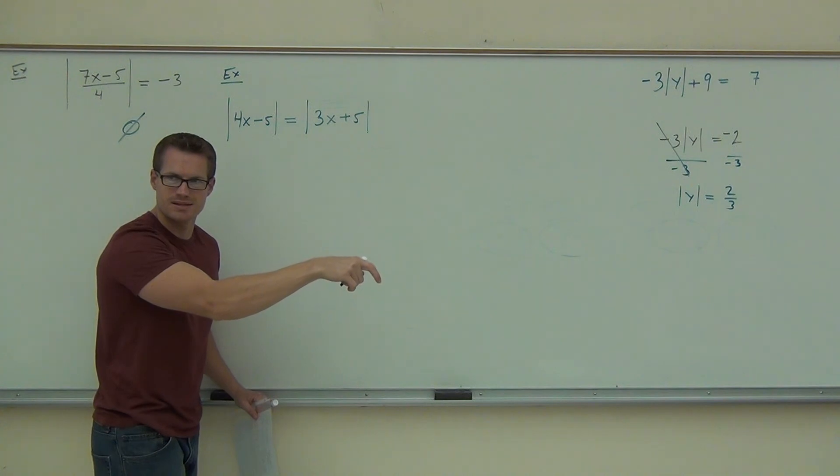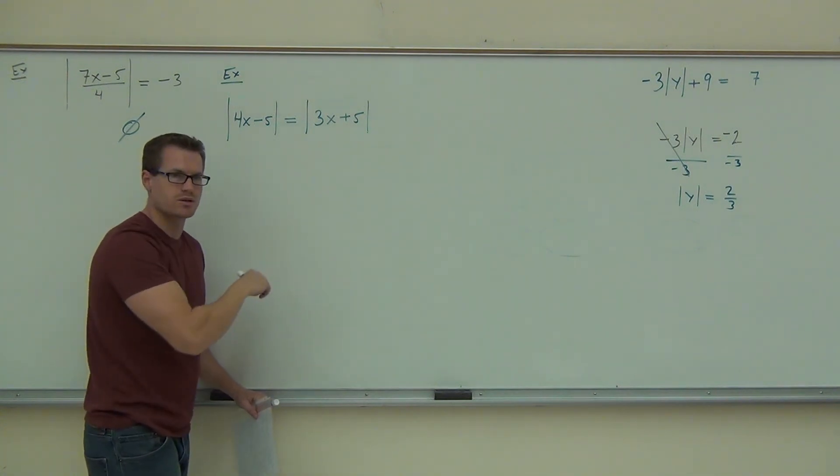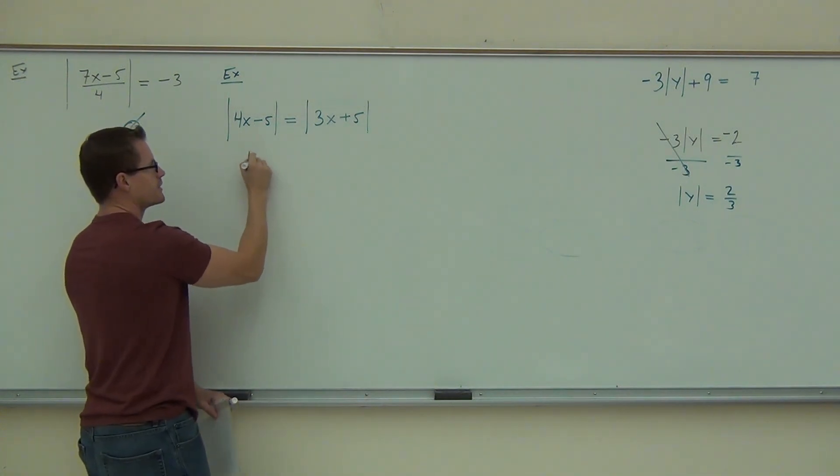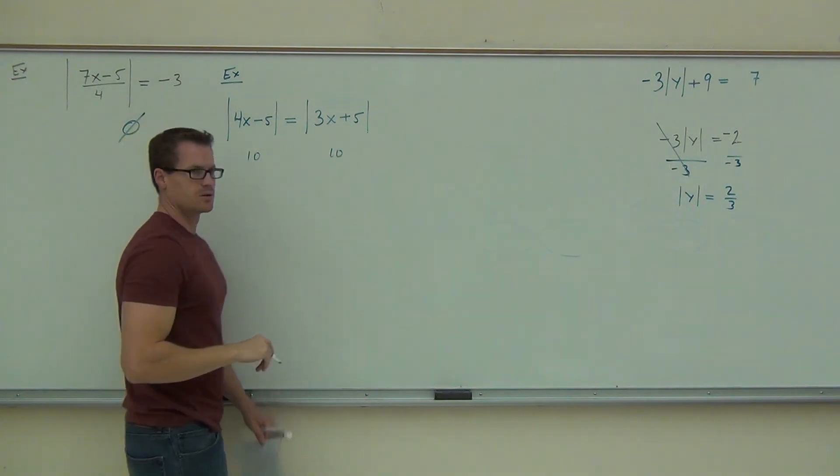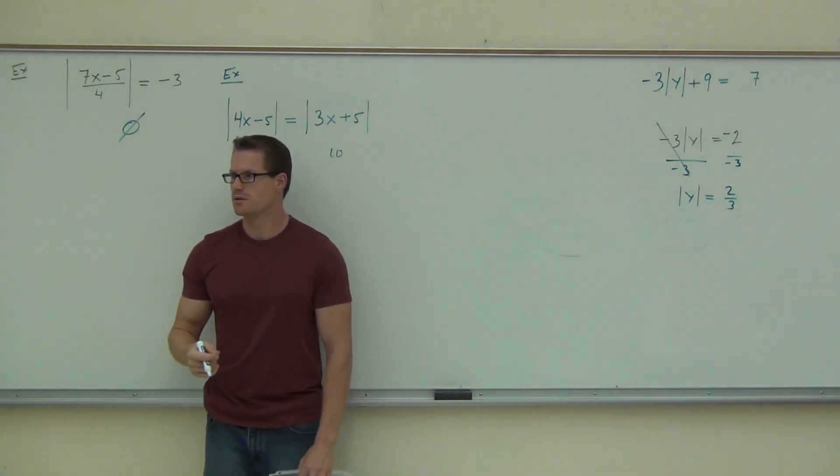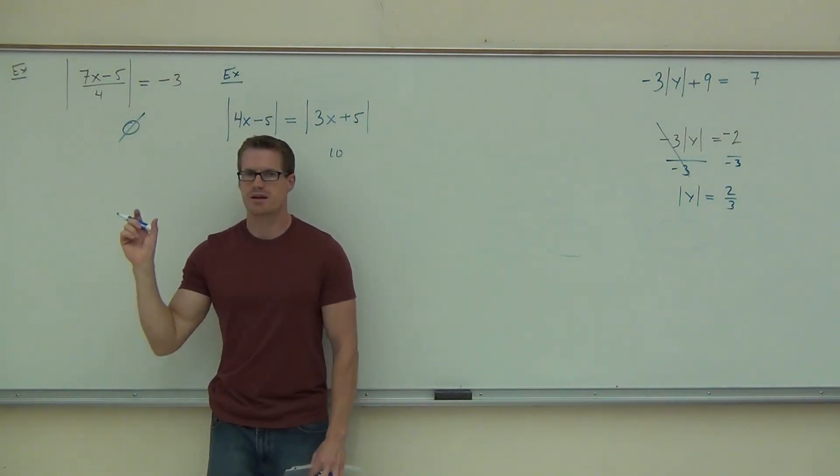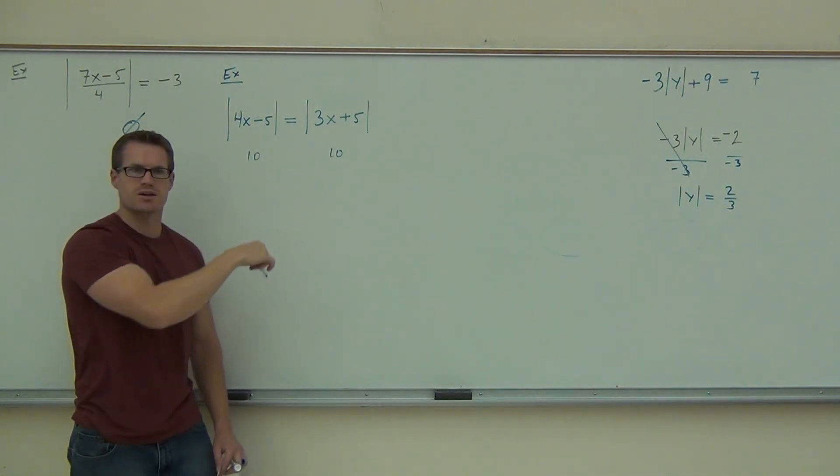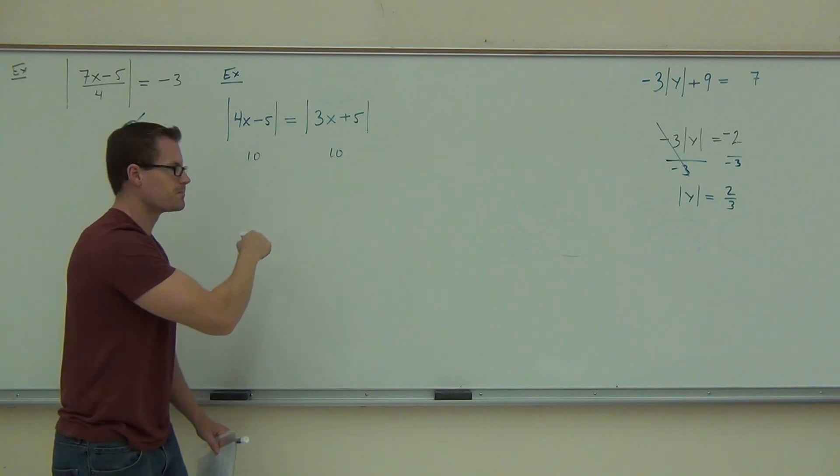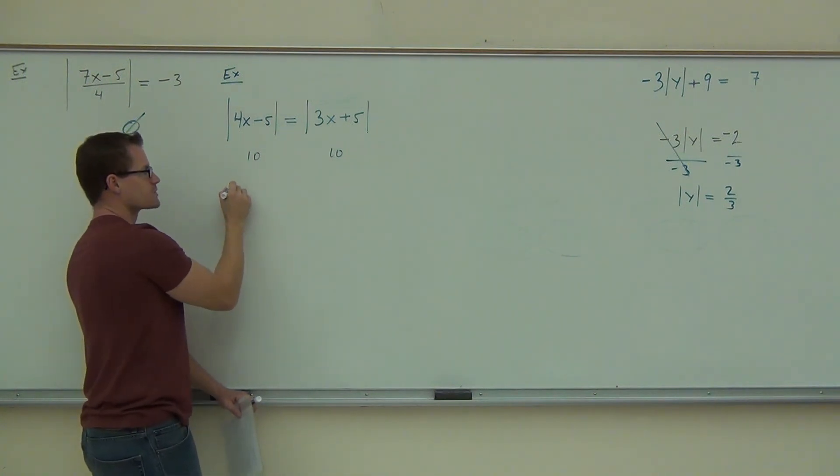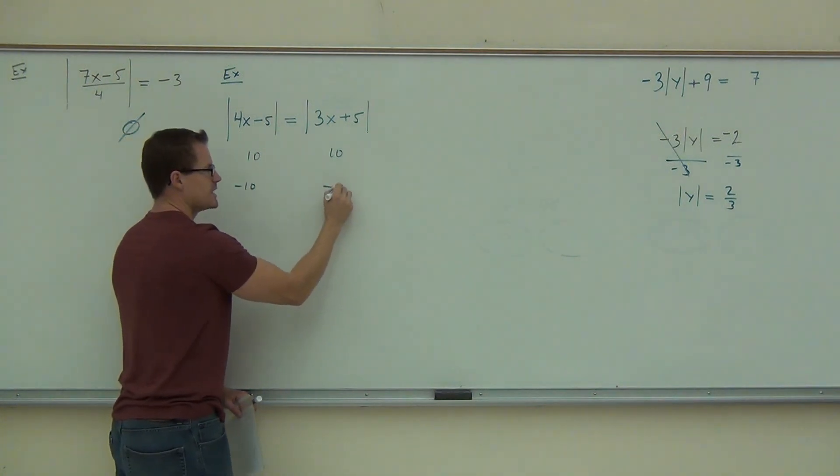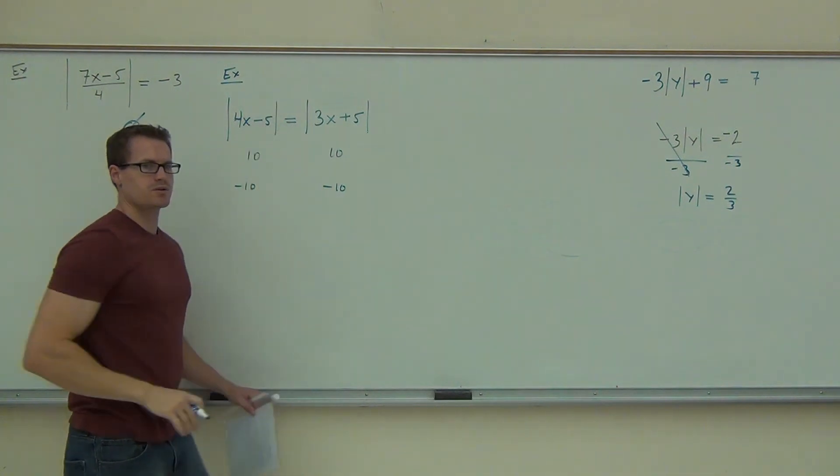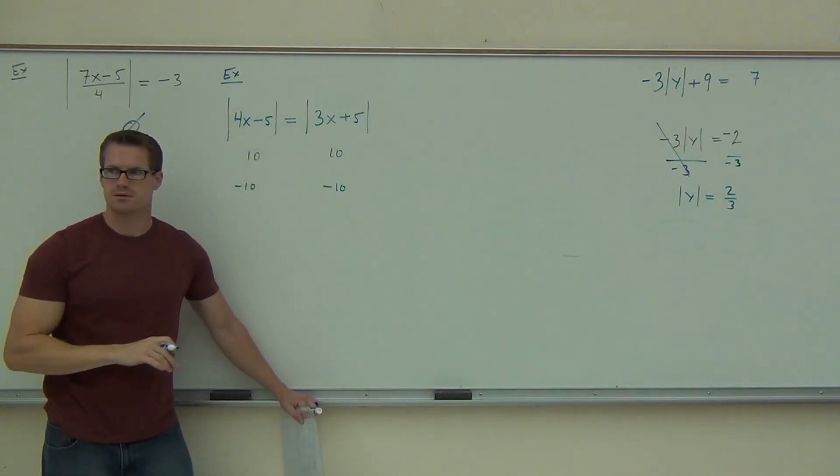How many cases make these expressions equal to each other? If this was positive 10 and this was positive 10, would they be equal to each other? Because the absolute value of positive 10 equals the absolute value of positive 10. Does that make sense to you? So when I take the absolute value, they'd be equal. That's case one. How about this? What if this was negative 10 and this was negative 10? Would they be equal to each other there? Are you sure?